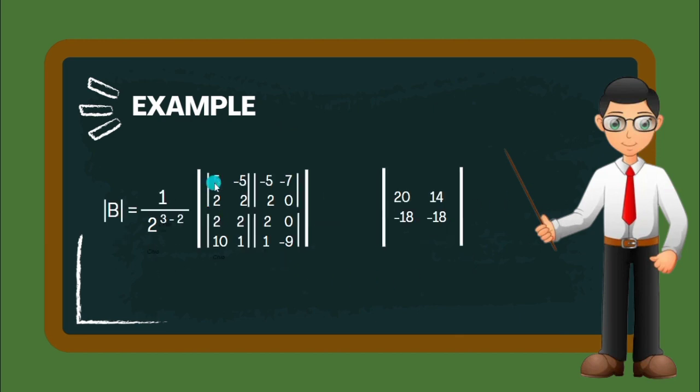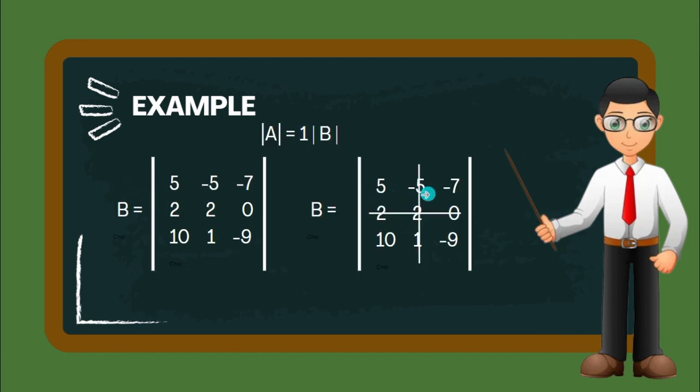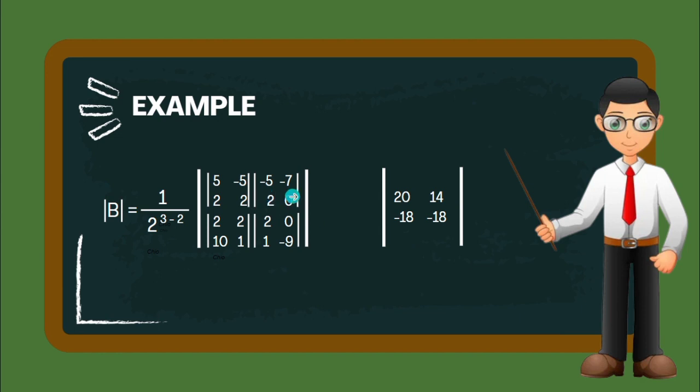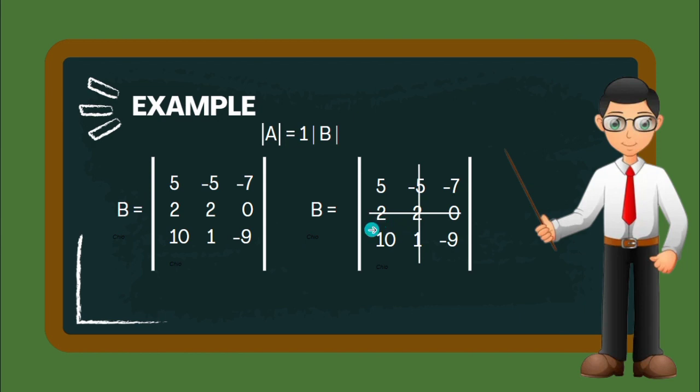5, 2, -5, 2. Then we will be starting here. -5, -7, 2, 0. Then, 2 and then the pivot element 2, and then 10, 1, 2, 0, 1, and -9.